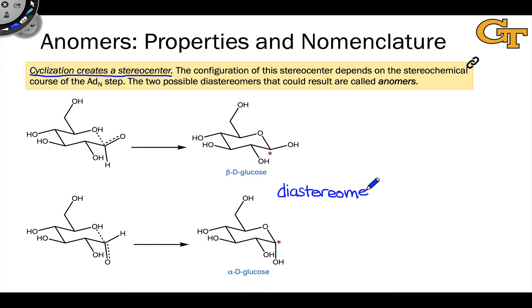These two structures differ in configuration at the starred carbon but have the same configuration at all the other stereocenters. Diastereomers of cyclic monosaccharides that differ only in configuration at the anomeric carbon are called anomers. In fact, that's where the name anomeric carbon comes from.